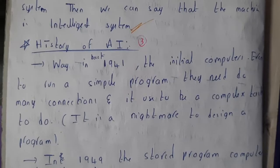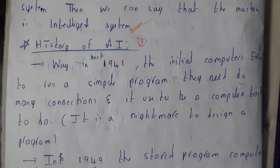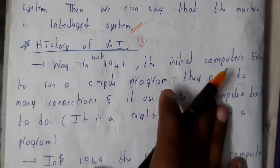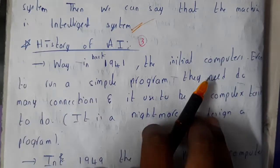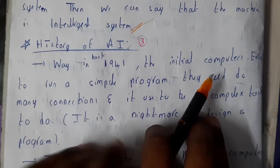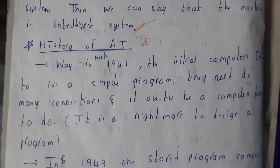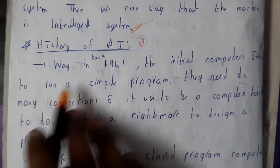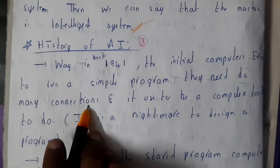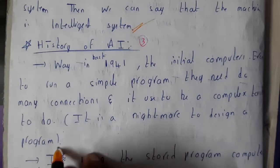Computers started in the year 1941. In the initial stages, it was really tough to do programming — there were no concepts of memory or storage. They would connect different wires to do programming, not typing or compiling. Even to run a simple program, they needed to do many connections. It was a complex, nightmare task for the designers.